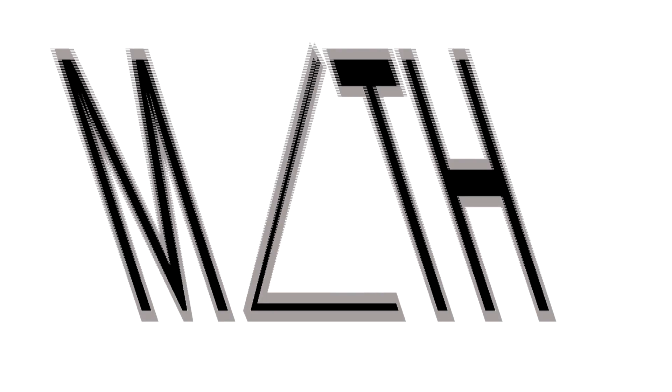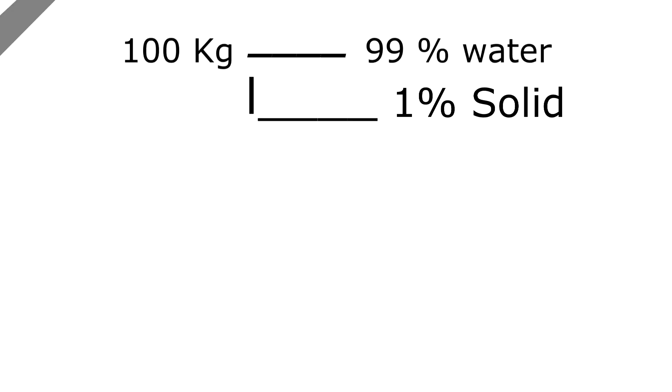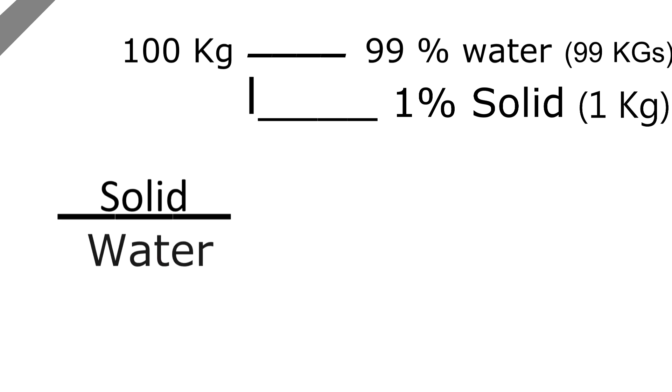So how do these potatoes weigh 50 kilos? In order to get the answer, let's do some math. Let there be 100 kilos of potato and these potatoes contain 99% of water by weight, which means that 99% of water is 99 kilos of water and 1% is 1 kilo of solid. Then the ratio of solid to water is 1 to 99.